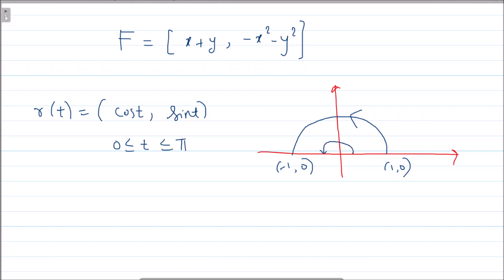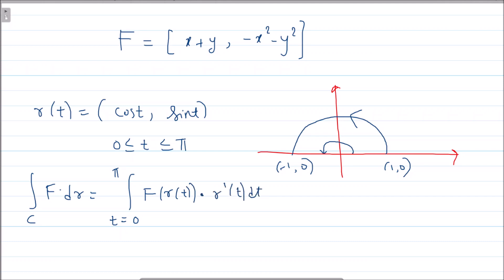Now, the line integral of F dot dr along curve C is evaluated by taking the limits of t — in this case 0 to π — computing F of r(t), and then taking the dot product with r'(t).